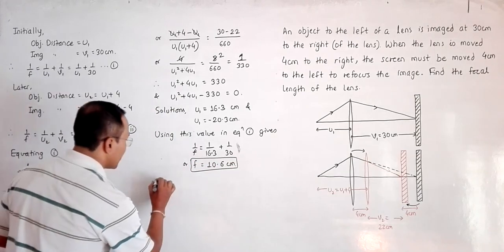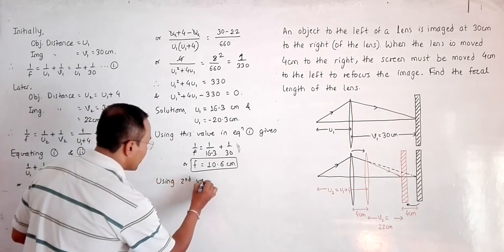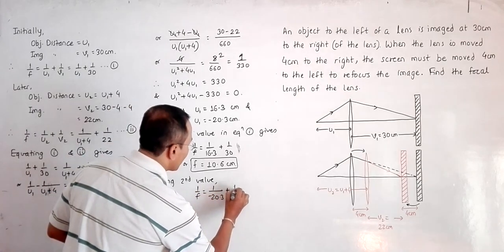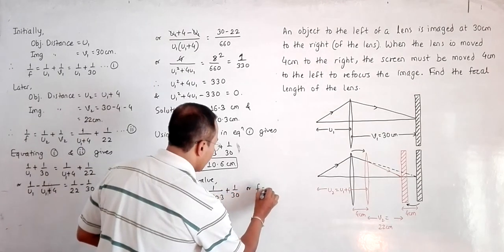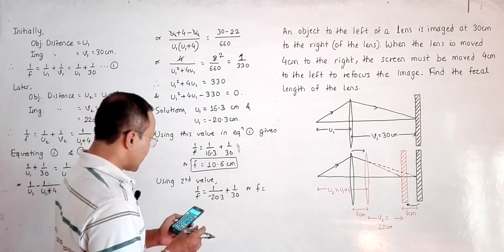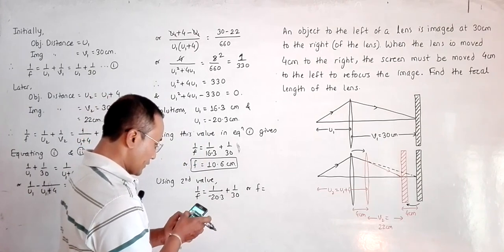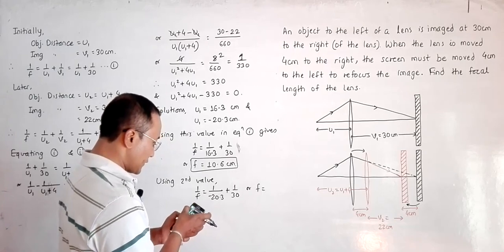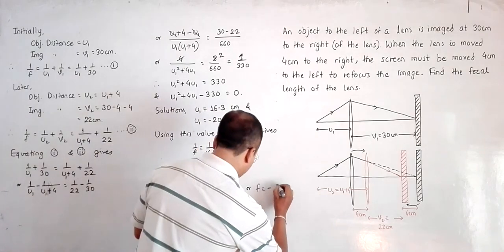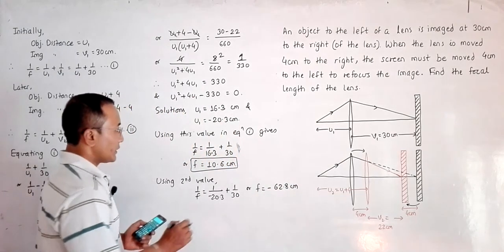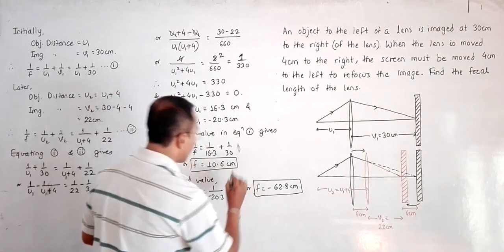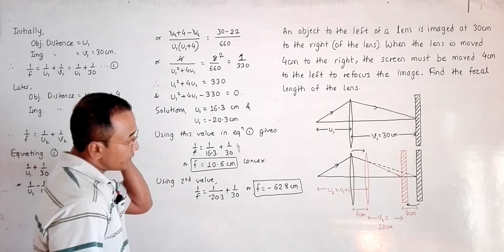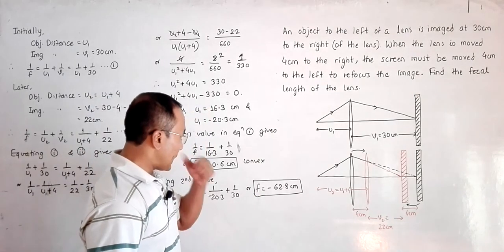Using the second value: 1/f = 1/(−20.3) + 1/30. Calculating: 1/30 − 1/20.3 gives f equal to −62.8 centimeters. So the first possibility is a convex lens with focal length 10.6 centimeters, and the second is a concave lens with focal length −62.8 centimeters.